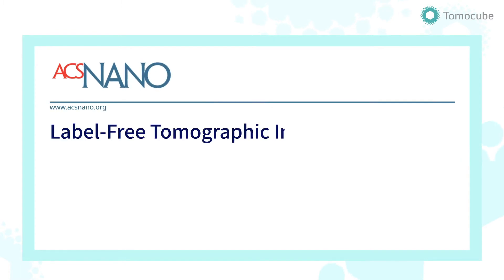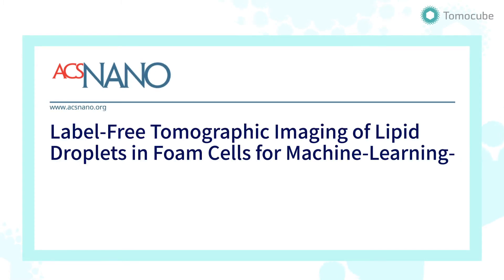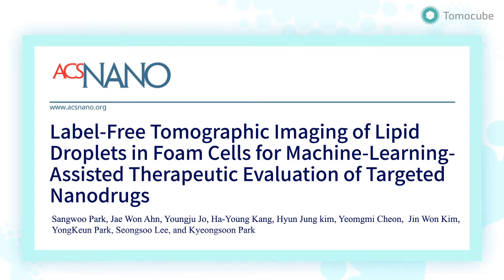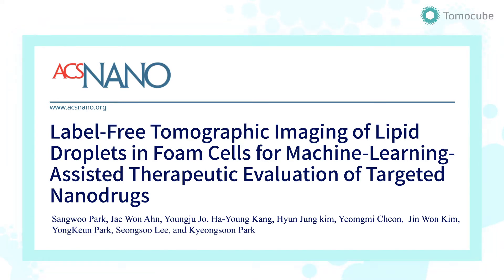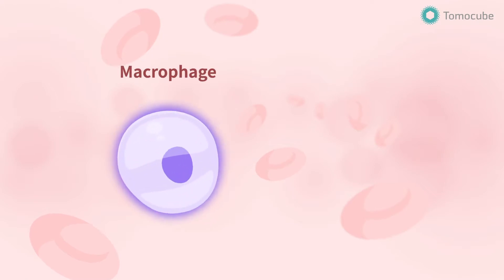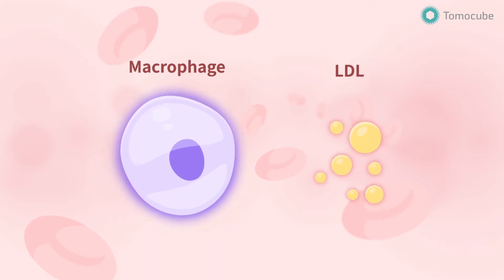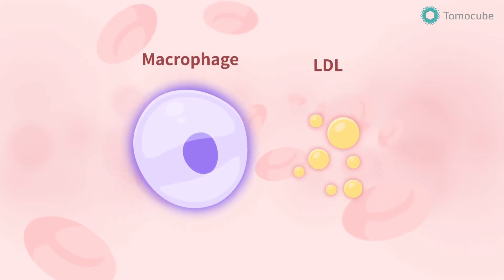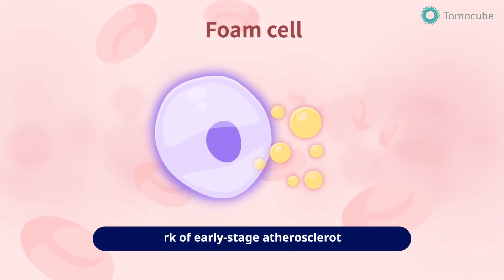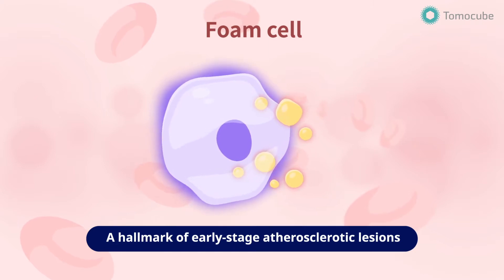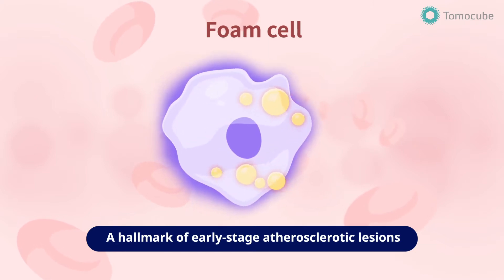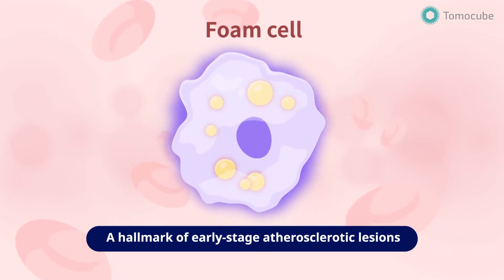This video seeks to introduce the results of holotomography, used in a publication on tomographic imaging of lipid droplets in foam cells for targeted nanodrug delivery. When the blood's low-density lipoprotein concentration increases, some macrophages uptake the LDL, which causes them to become foam cells. This phenomenon is representative of early arteriosclerosis, which can be identified by an increase in cytoplasmic lipid droplet content in the cell.